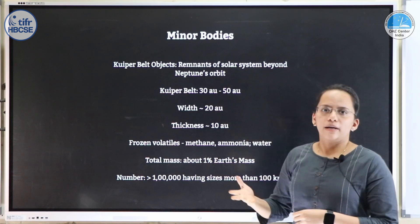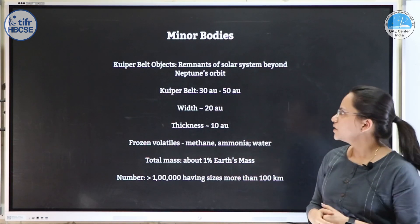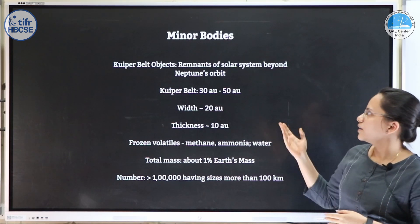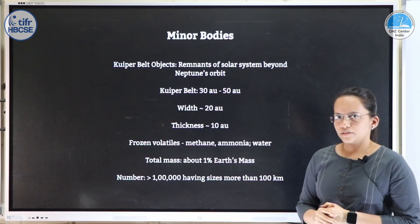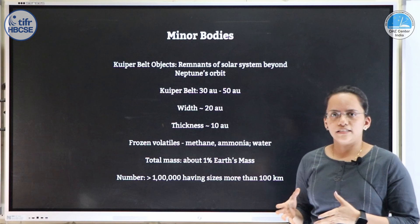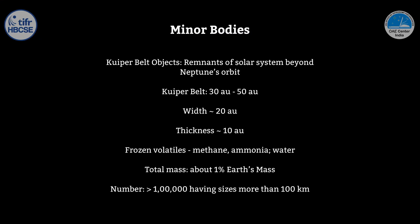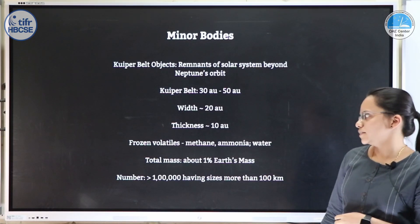There is another set of minor bodies similar to the asteroid belt which is beyond Neptune's orbit, called the Kuiper belt, and the bodies there are called Kuiper belt objects. These are also remnants of the solar system but they are more icy in nature rather than rocky. This belt extends from 30 to 50 AU, with a width of about 20 AU, a thickness of about 10 AU, and a total mass of about 1% of Earth's mass.